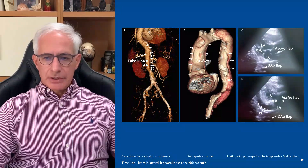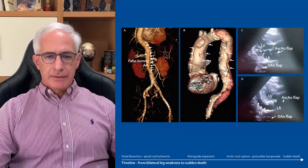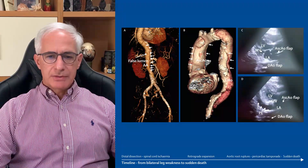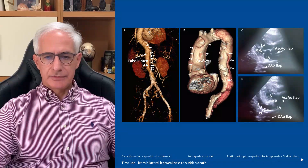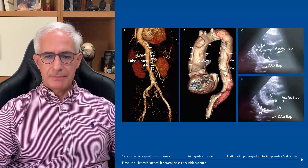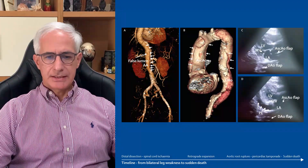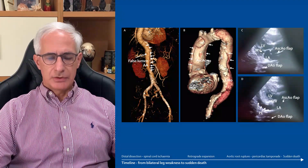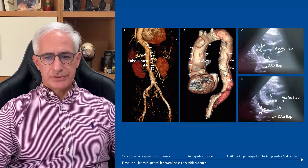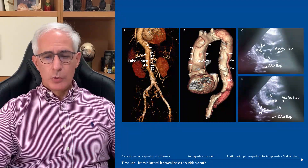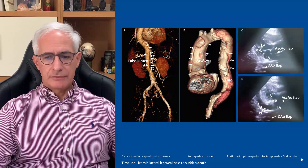The transthoracic echocardiogram in the emergency department shows clear sight of the dissection flap in the ascending and descending aorta, as indicated by the yellow arrows in Panel C, with no pericardial effusion.